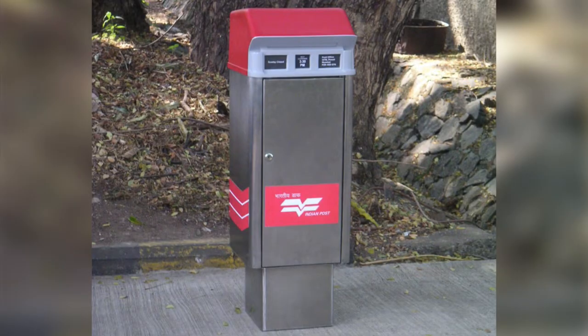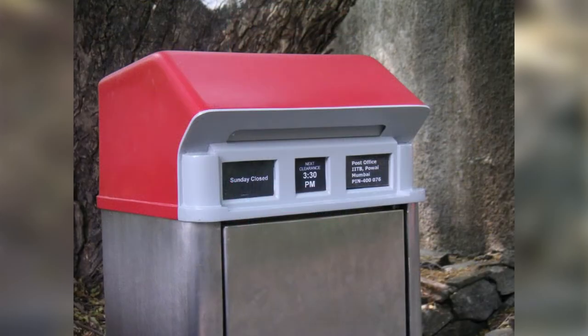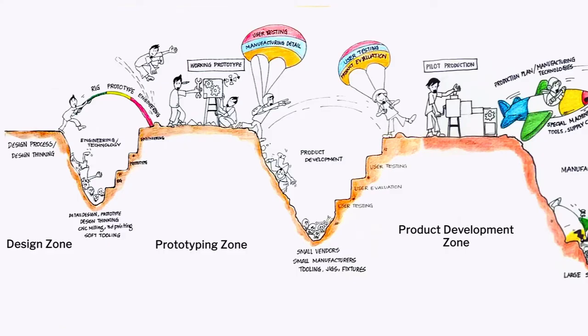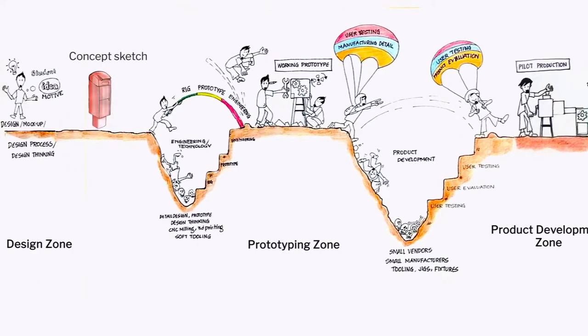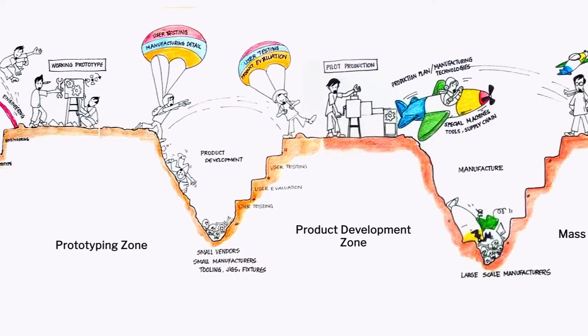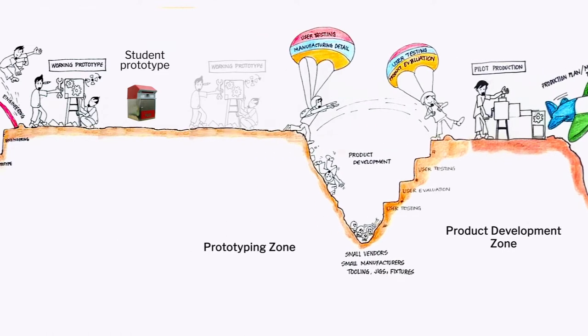Let me recap some of the details. That was the first prototype made at IDC, fabricated by plastics and sheet metal — fabrication was done by outside. Where do we stand when the first prototype is done in our design process? We are in the very early stage of our design — we just reached prototyping.